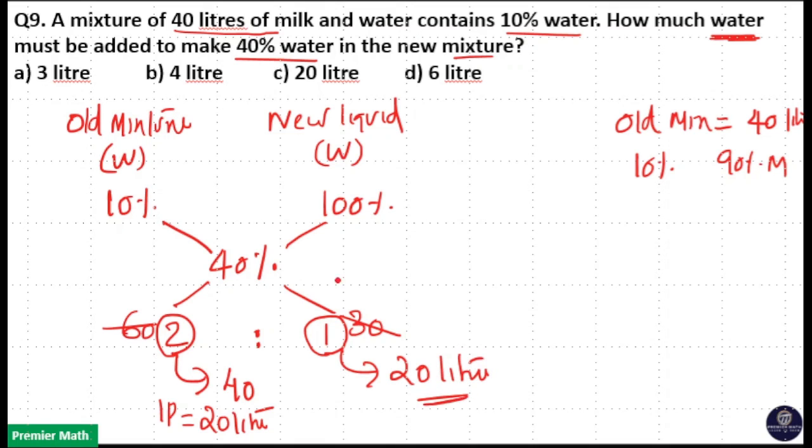So I think this method is easier than ratio method. So option C is your answer. Always do these questions in allegation method. This is easy.